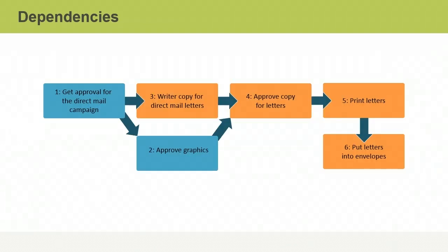A dependency exists when an activity can't start until another one is completed. As a simple example, you can't approve the copy for a direct mail campaign until it has been written. So the activity of approving the copy depends on the writing activity. This flow diagram also indicates that the letters must first be approved before you can print them and put the letters into envelopes.